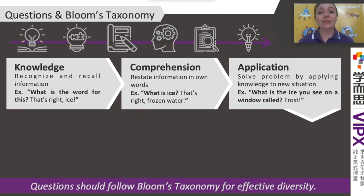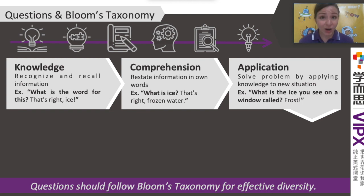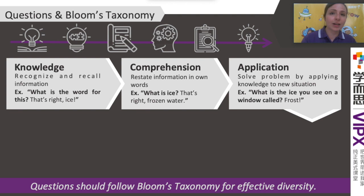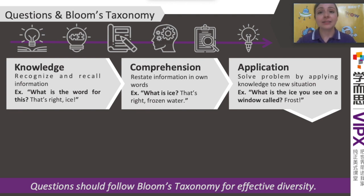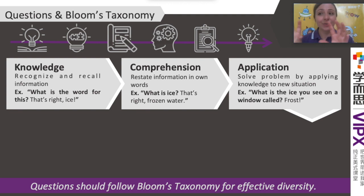As an example, you can say: what is the ice you see on a window called? Frost. So it's still ice, but it's another specific kind of ice. It gets them to understand the various types of this word that exist in the world and their different contexts and how that changes.